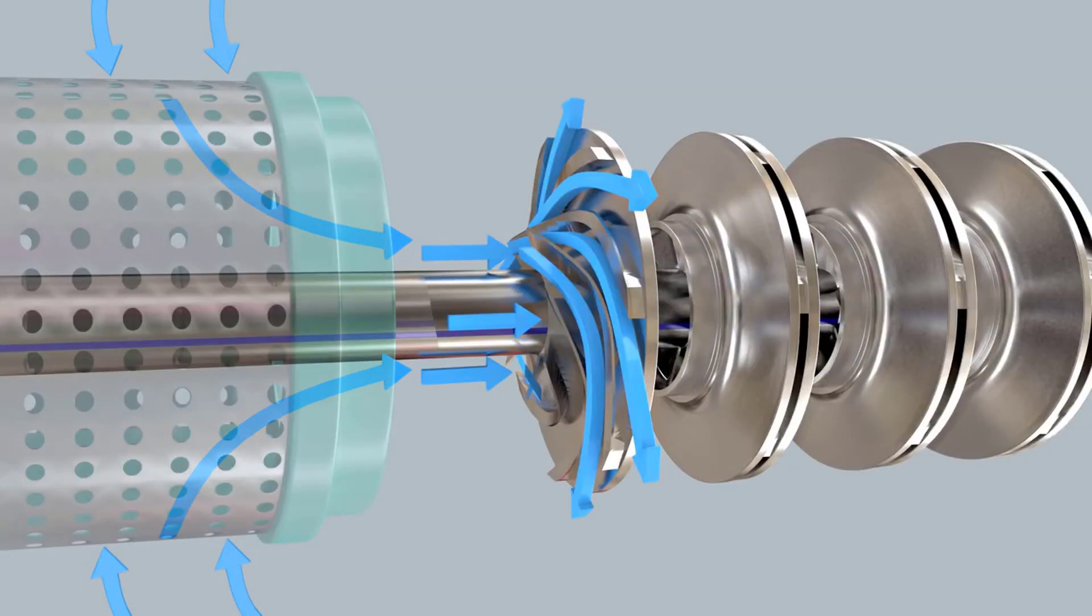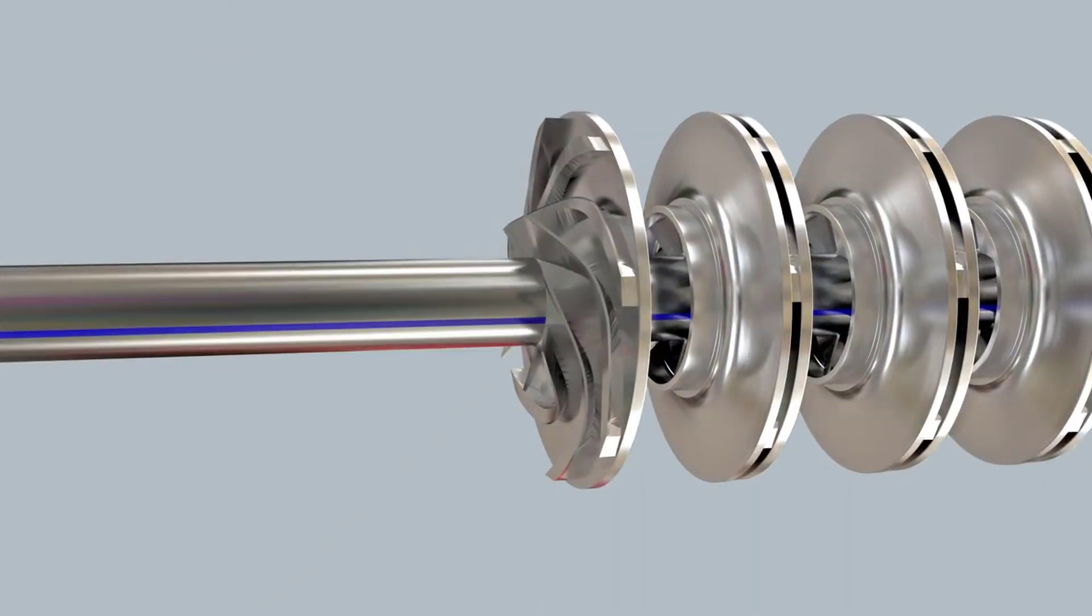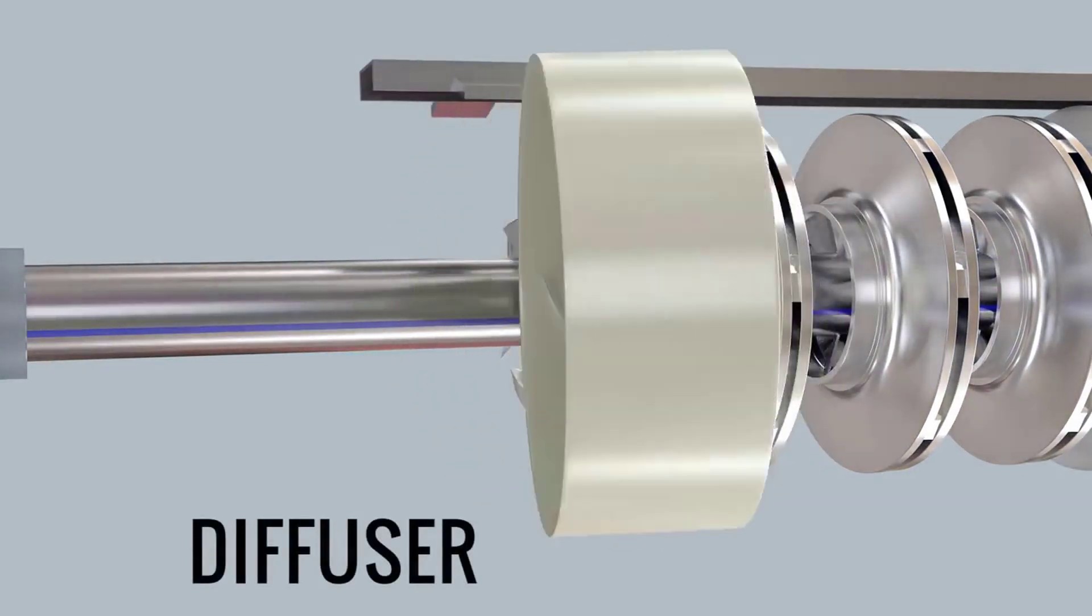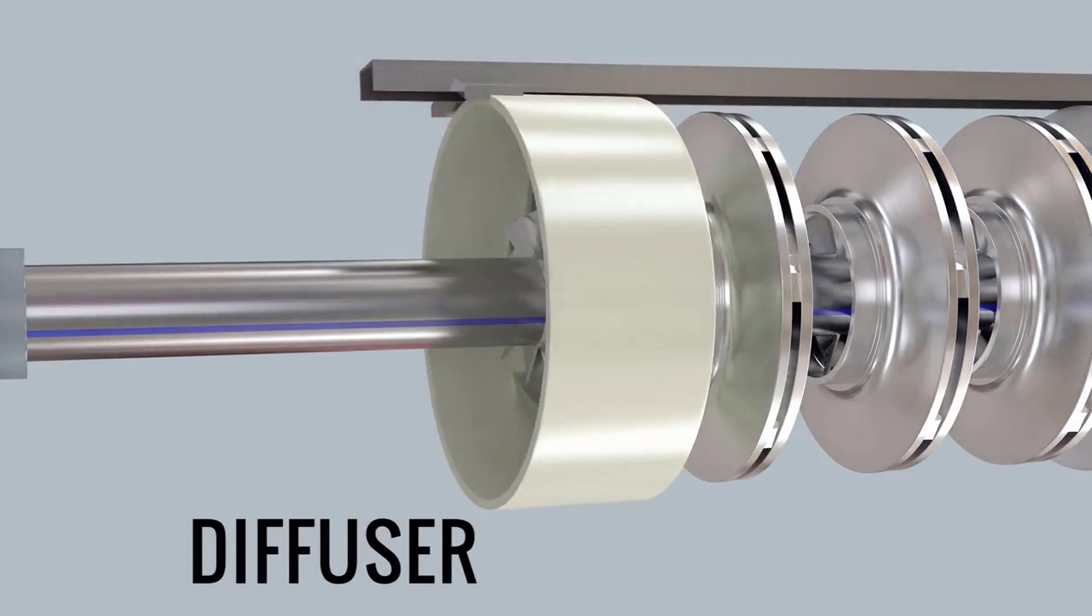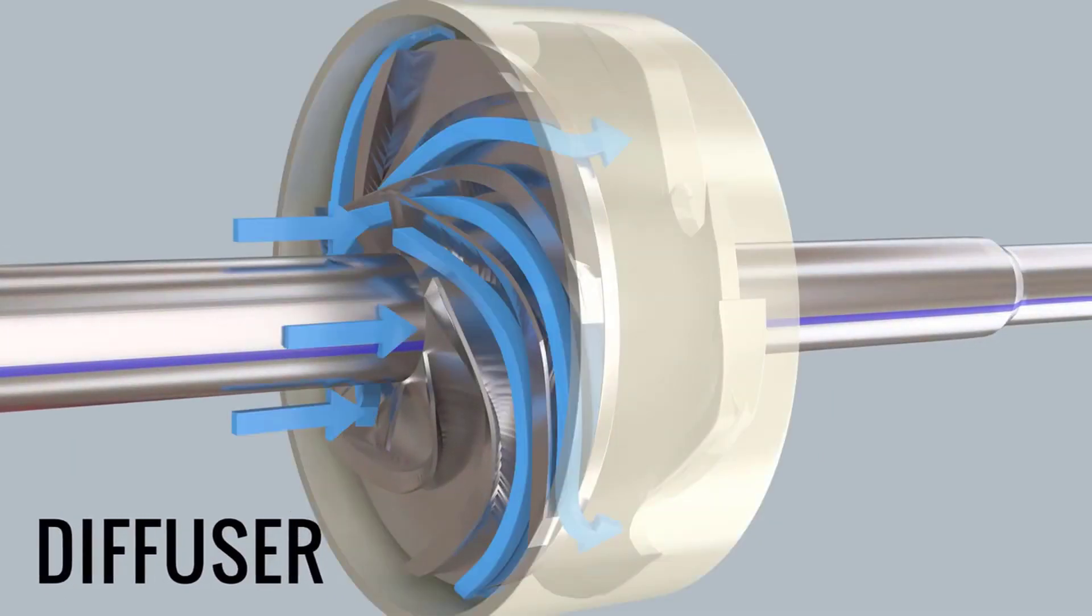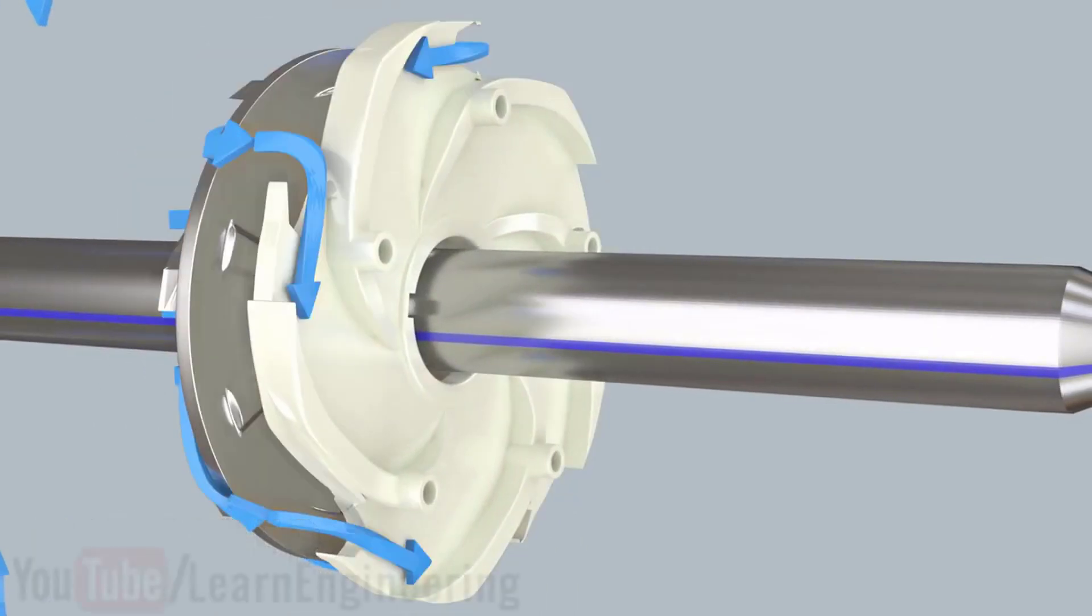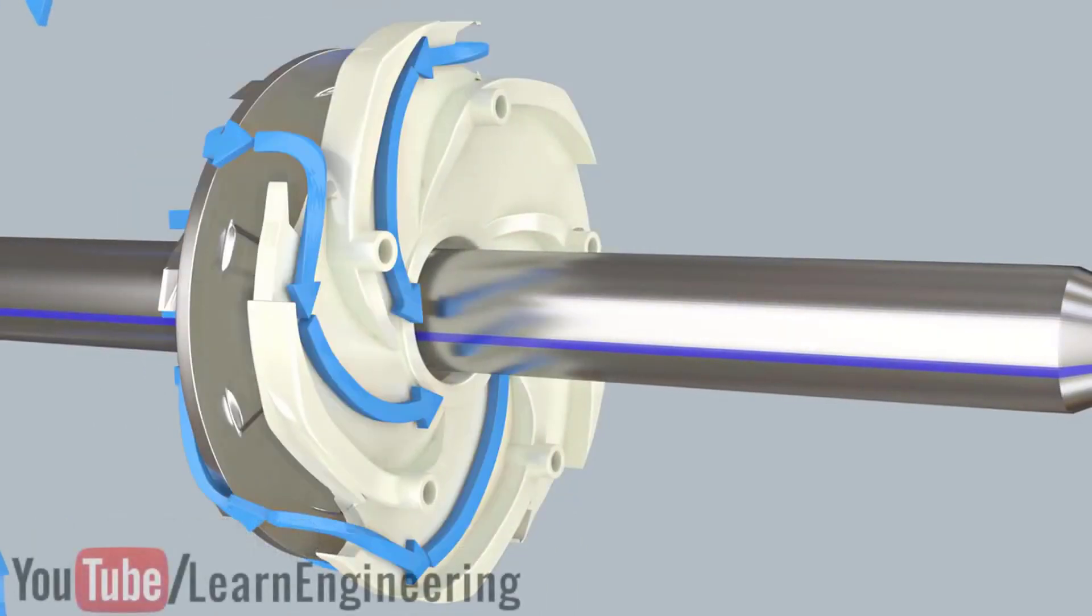The water enters through the eyes of the impellers, and they are then thrown out radially due to centrifugal action. This way, the water particles gain both kinetic and pressure energy. Now we need to pass this outlet water to the next impeller efficiently. A stationary device, called a diffuser, is used for this purpose. You can see how the water flowing from the impeller enters the diffuser. The diffuser then deflects the inlet water and makes it ready for the next impeller stage.